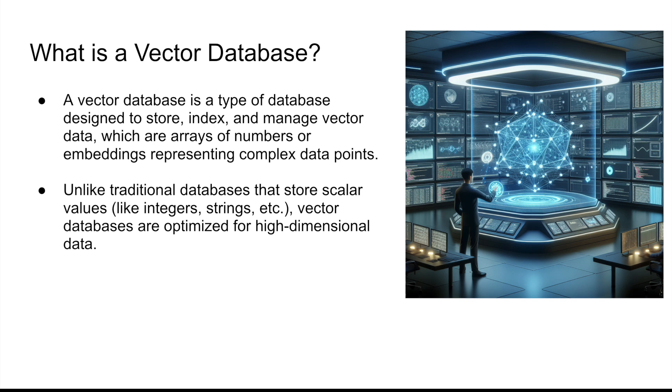A vector database is a type of database to store, index and manage vector data, which are arrays of numbers or embeddings representing a complex data point. This complex data point can be an image, can be text, can be audio. Anything that you can think of which can be represented as numbers, all of those can be represented as embeddings and can be stored in a vector database.